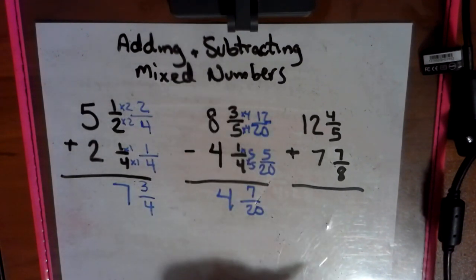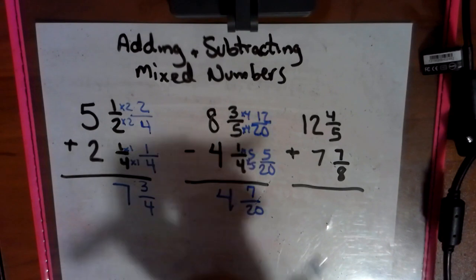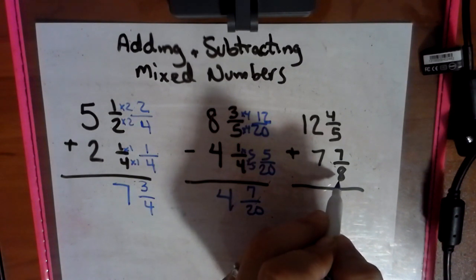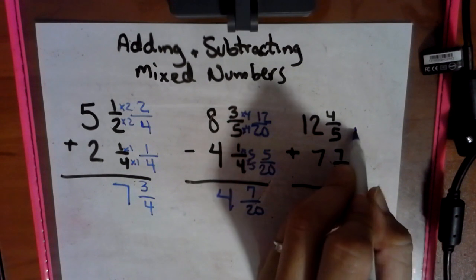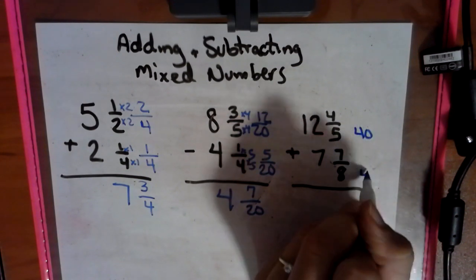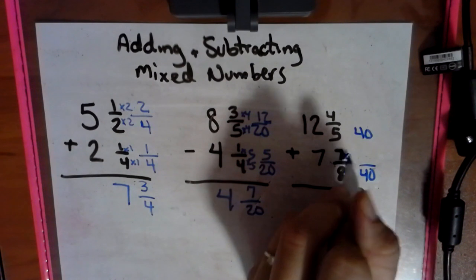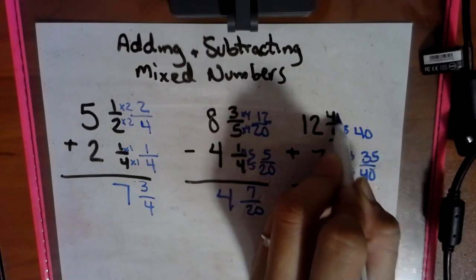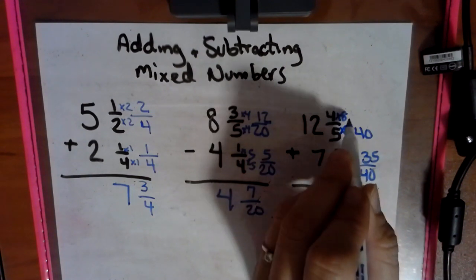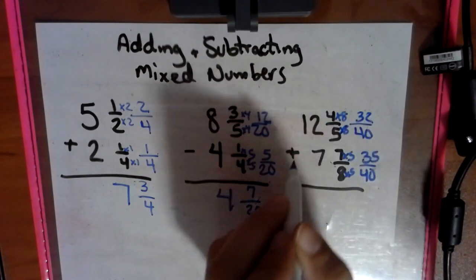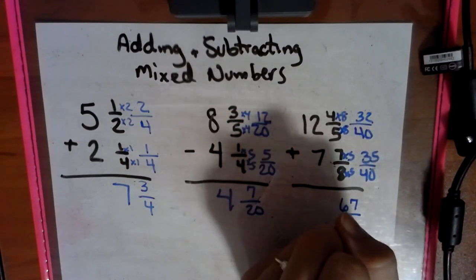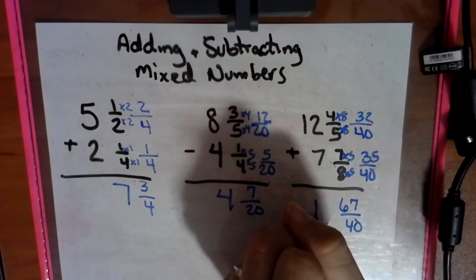So far we haven't had to simplify. If this was eight twentieths, we'd have to simplify it. So, common denominator here. Eight, sixteen, twenty-four, thirty-two, forty. Looks like forty. We count by fives, we can land on forty. We need to multiply by five. Multiply its numerator by five. We get thirty-five. Five goes to forty by eight. Four times eight is thirty-two. We are adding this, thirty-two and thirty-five, sixty-seven fortieths. Twelve plus seven, nineteen.